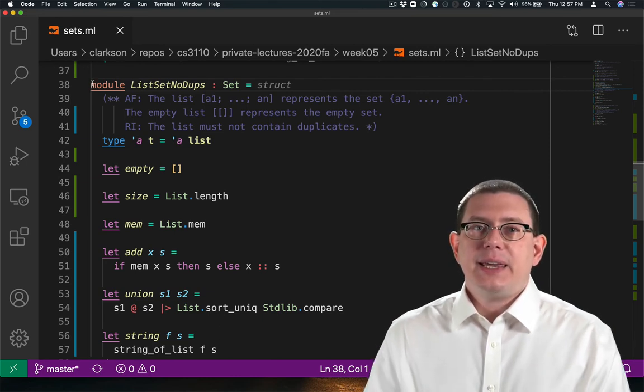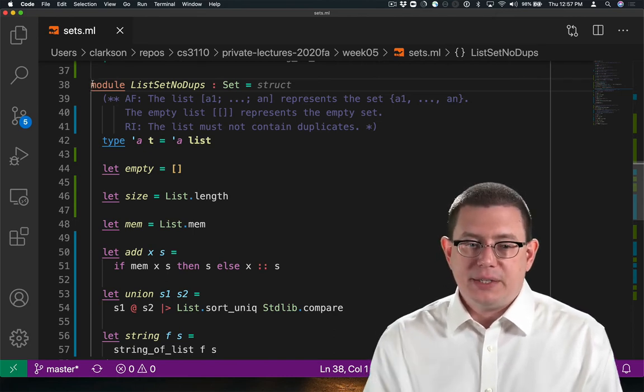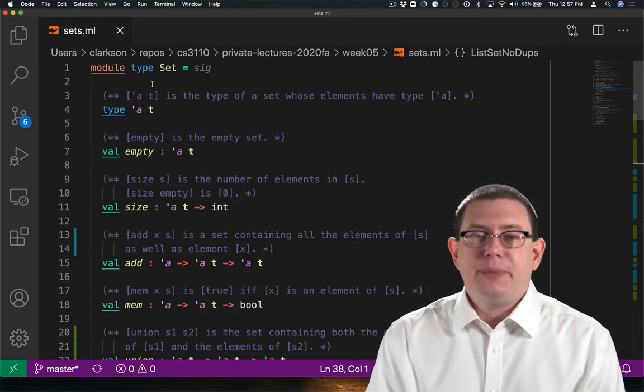Now that invariant is hidden from the client. We don't actually document it in a client-facing place. We wouldn't write it, for example, in the module type set up here.